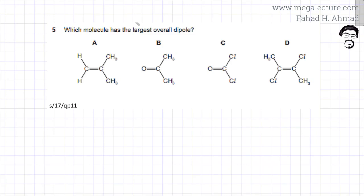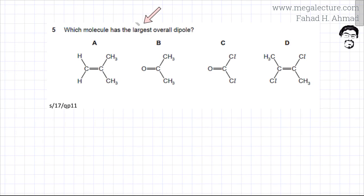The question asks which molecule has the largest overall dipole. The molecules that are going to have the largest overall dipole are the ones that have a difference in electronegativity and where the dipoles are not going to cancel each other out.